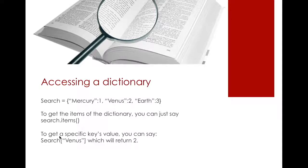If you want to access a value, let's say you want to access the value of Venus, you can just say search, and this time we are not dealing with indexes, we are dealing with the keys. If I say search of Venus, that will basically return 2 because you are specifying the exact key that you want the value of.